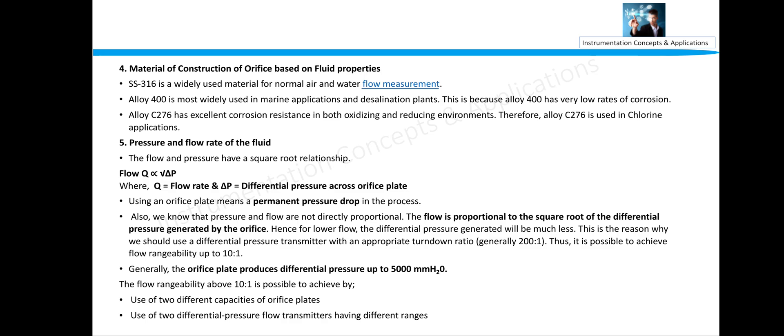Material of construction: this is due to if the process is corrosive, then we need to change the material. SS316 is widely used material for normal air and water. Alloy 400 is widely used in marine applications and distillation plants. This is because Alloy 400 has a very low rate of corrosion. Alloy C276 has excellent corrosion resistance in both oxidizing and reducing environments also. So you will see this material also in case of corrosive service, but this is little costly.